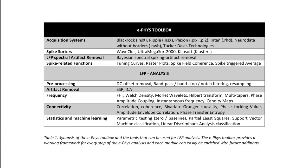Brainstorm has been developing for 20 years, so there is a plethora of functions available. These include spiking-related analysis like tuning curves, preprocessing like filtering and resampling, artifact removal with SSP and ICA, frequency analysis like Morlet wavelets or multi-tapers, connectivity, statistics, and machine learning. If you want to do statistical analysis between two conditions, there are tools to do this.